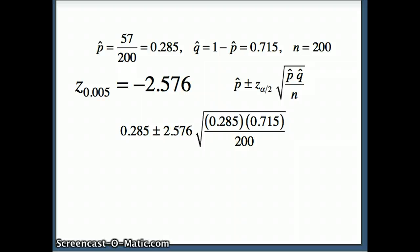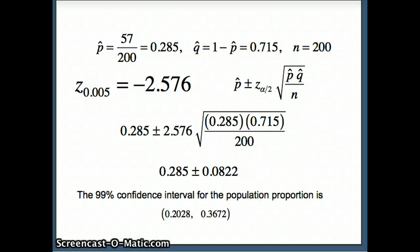So we have 0.285 plus or minus 0.0822, which gives me a 99% confidence interval from 0.2028 to 0.3672. Please notice that the 99% confidence interval is indeed wider than the 95% confidence interval.